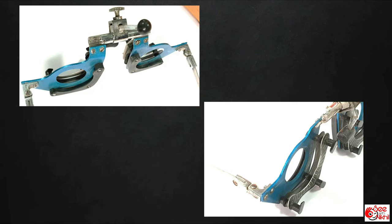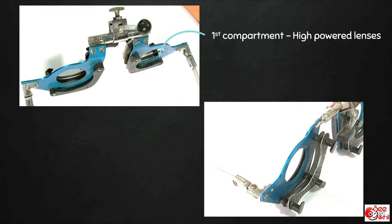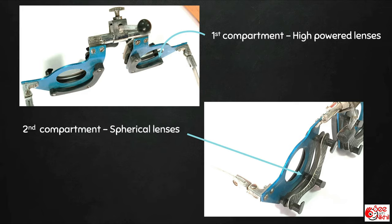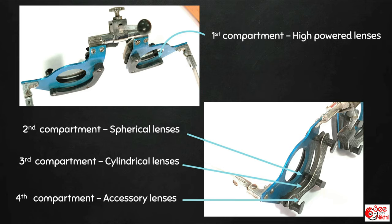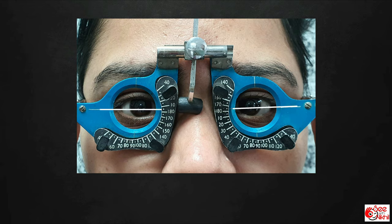Coming to the last part of the trial box — the trial frame. The trial frame has various compartments. The first compartment, nearest to the eye, is for high-powered lenses, usually plus lenses or near addition lenses used to correct presbyopia. These are placed closest to the eye because as the distance of plus lenses from the eye increases, their effective power also increases. The second compartment is for spherical lenses, the third for cylindrical lenses, and the fourth for accessory lenses. The trial frame also has crosshair markings: the horizontal line should align to cut through the center of the pupil — adjusted by the nose rest — and the vertical line should be aligned to cut vertically through the center of the pupil, adjusted by the interpupillary distance (IPD). Proper alignment ensures the patient views the chart through the center of the trial lens.